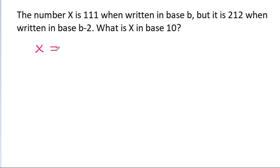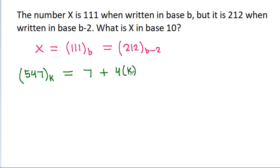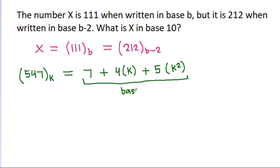So x is equal to 111 in base b, and it is equal to 212 in base b-2. Any number — suppose 547 in base k — is equal to 7 plus 4 times k plus 5 times k squared. This way, we can convert it to base 10.